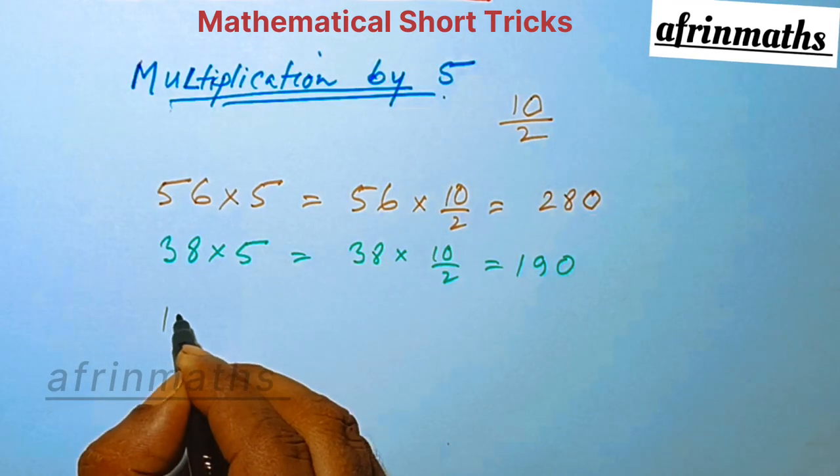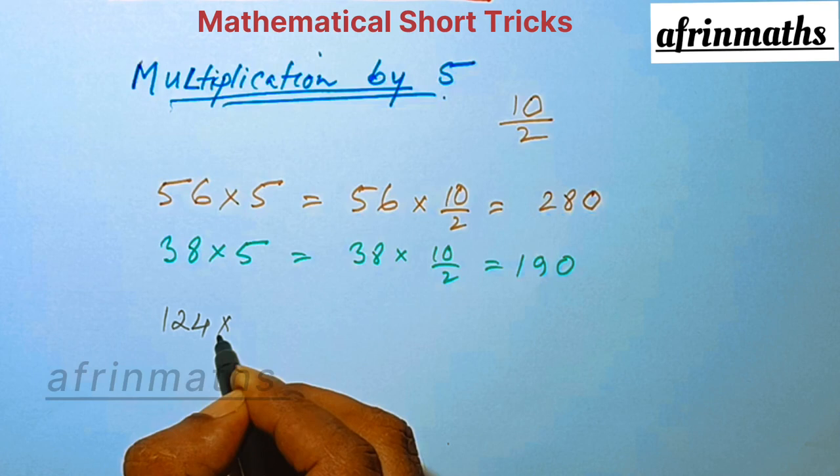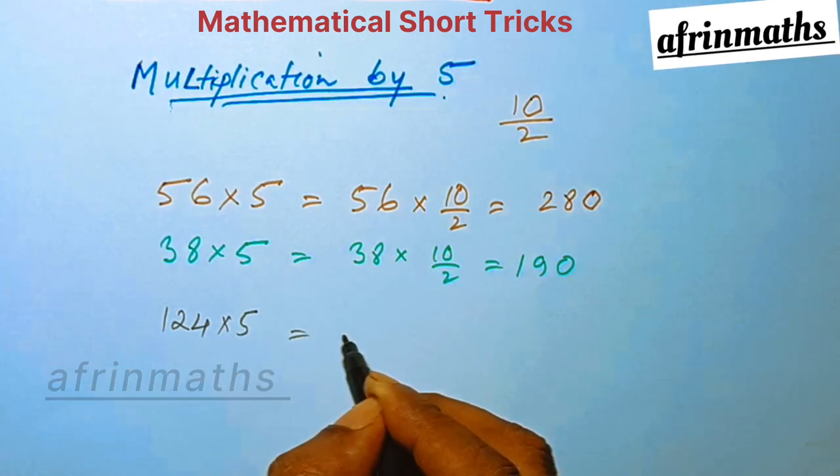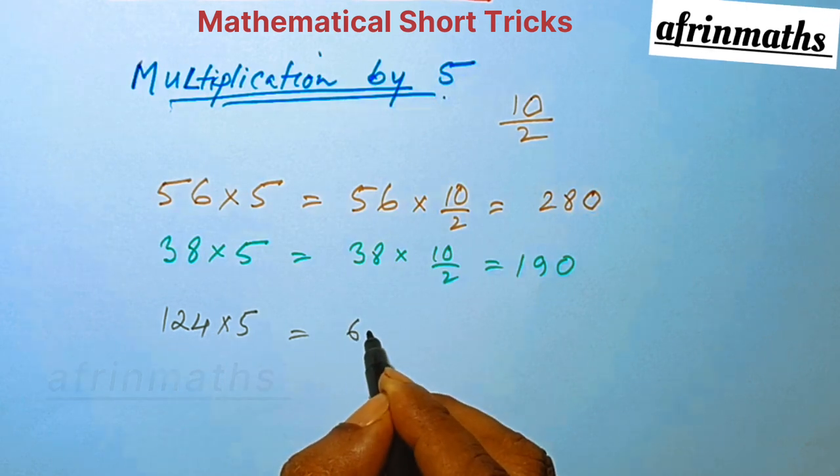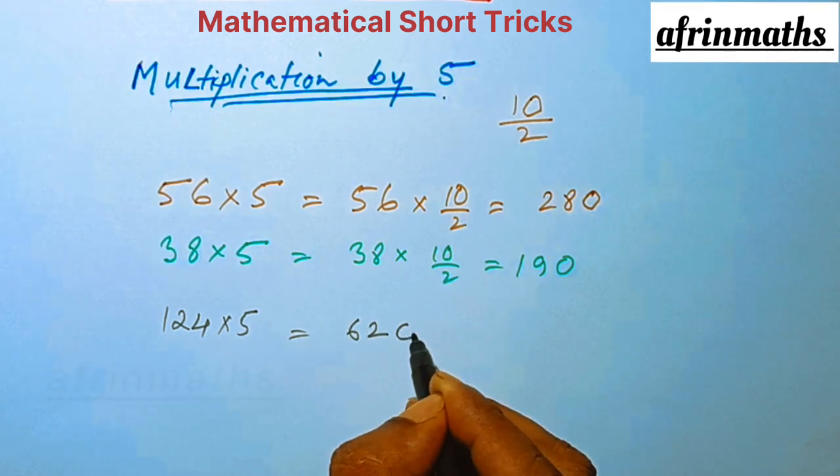We can take 124 multiplied by 5, which is half of 124 is 62, and we put a 0, so 620.